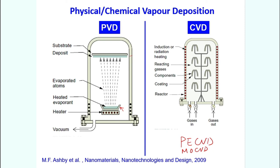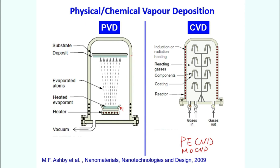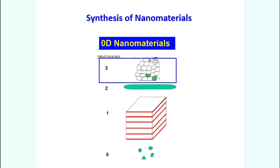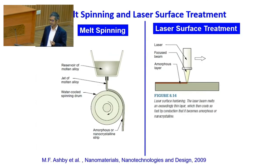In PVD you evaporate or sputter something to generate vapor molecules that deposit on a substrate. In CVD you decompose a gas to produce a deposit on a substrate — both routes and their many variations can create 2D nanomaterials. Sol-gel can also be used to form thin films.